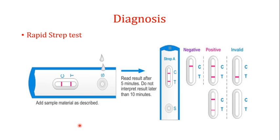For diagnosis of Streptococcus pyogenes, two common methods are used. The first is the rapid strep test, which gives results in about five minutes. You introduce your sample into the strip — this image shows the structure of the strip used in the rapid strep test. There is a T line, which is the test line showing presence or absence of antigen, and a C line, which is the control indicating the validity of the result. You add the sample to the sample well and read the results before 10 minutes.